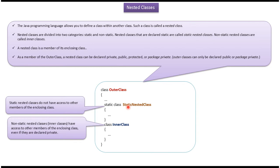A nested class is a member of its enclosing class. In this example, this class is the outer class and this class is the static nested class because it is declared with the static keyword. And this class is the inner class because it is not declared with the static keyword.